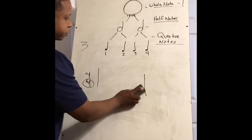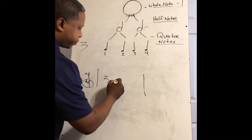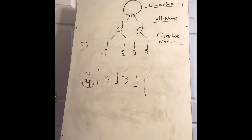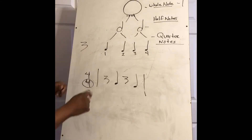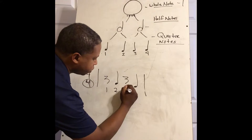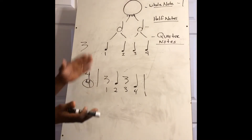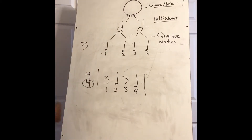Let's look at another one. Tempo-wise right here: you have one, two, ready, and rest, two, three, four. Let me put the count so you can see it. So count it again — one, two, ready, and one, two, three, four. Rest, two, three, four. I hope that makes sense.